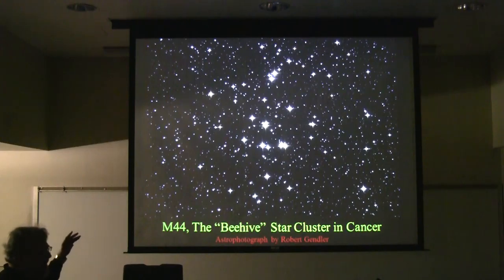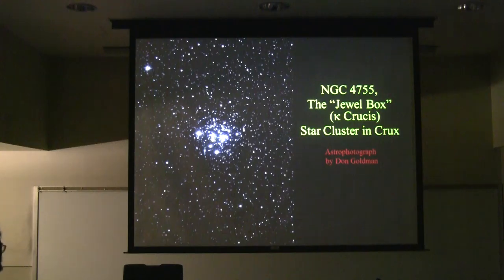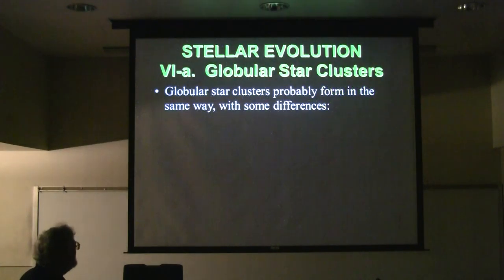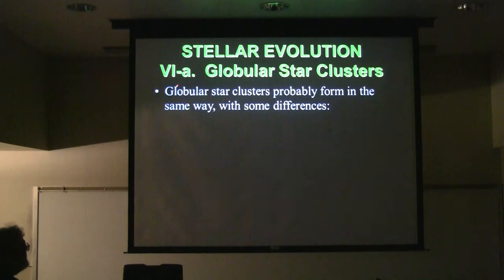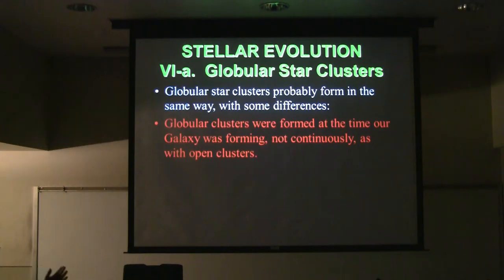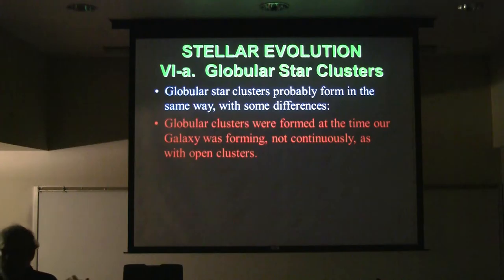Here are some examples of very nice-looking open star clusters: the Beehive Cluster in Cancer, right between Gemini and Leo in the spring sky. And here's one of my favorites from the southern hemisphere — the Jewel Box in the Southern Cross next to Kappa Crucis. It almost looks like a little string of Christmas lights with all the different colors of the bright stars.